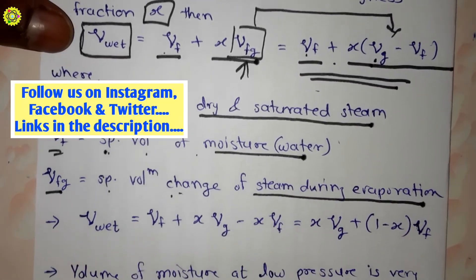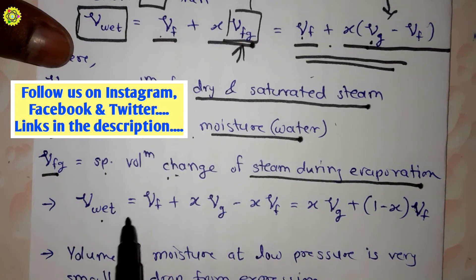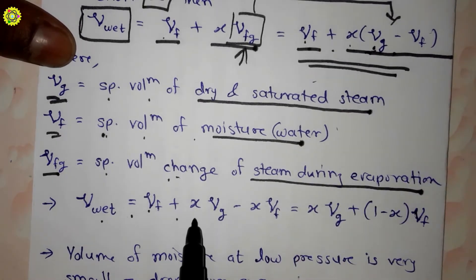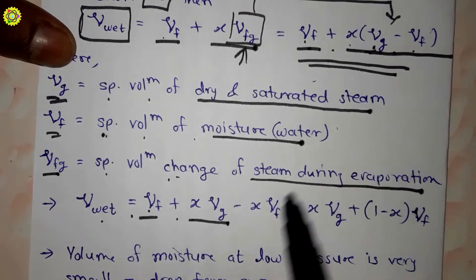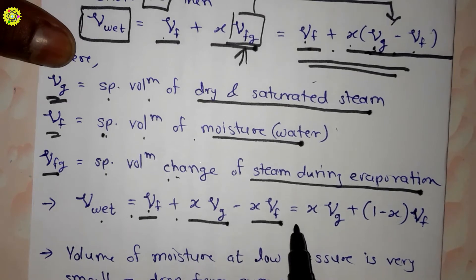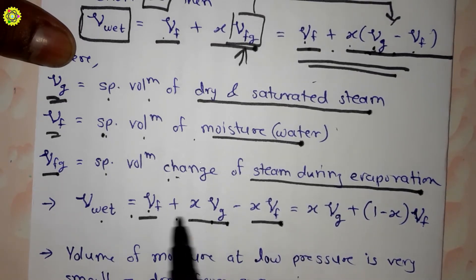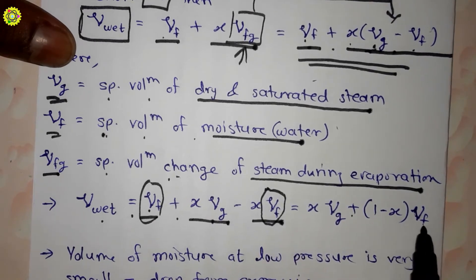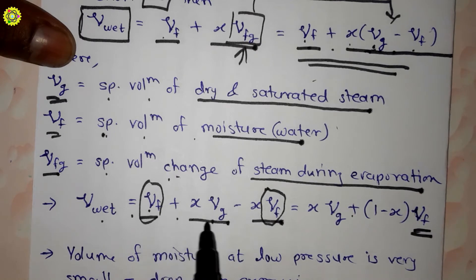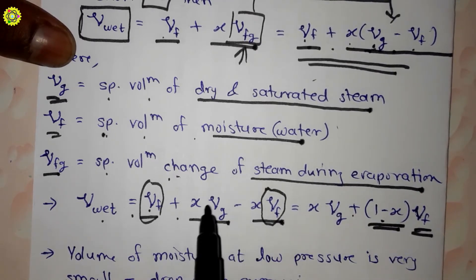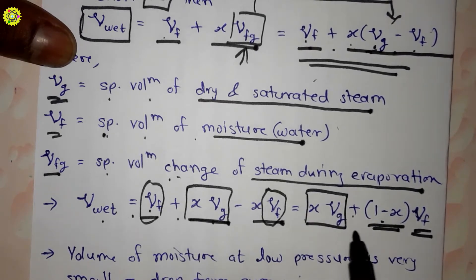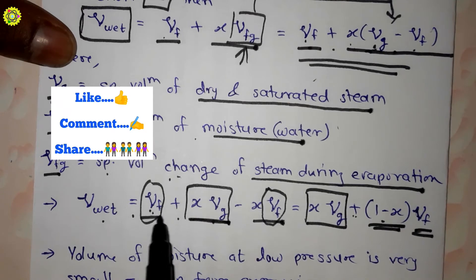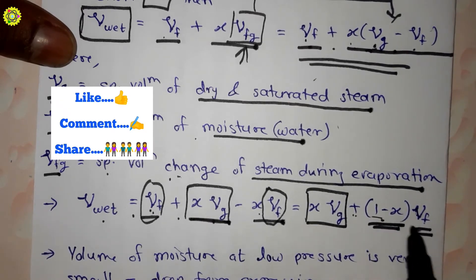Now we will simplify this term. v_wet equals vf plus x into (vg minus vf). Multiplying x into the bracket gives x·vg minus x·vf. Taking vf common from the remaining terms gives vf(1 minus x). So the expression becomes x·vg plus vf·(1 minus x).